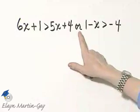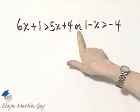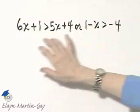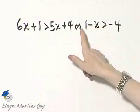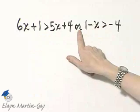Notice this is a compound inequality. It's two inequalities put together with the word or. So let's solve each inequality separately. And then we'll find or, which means the union.